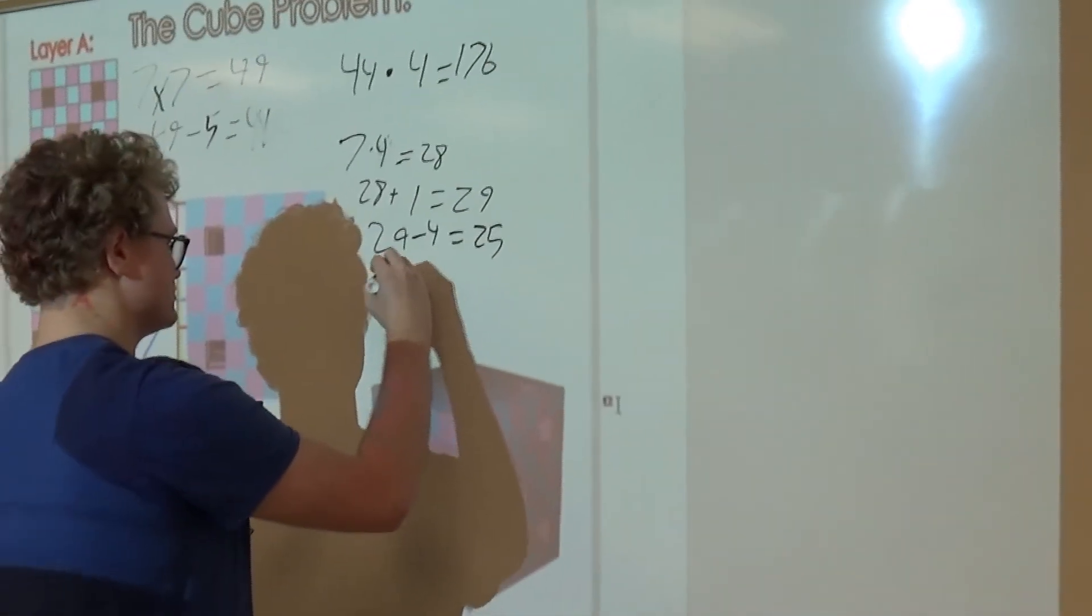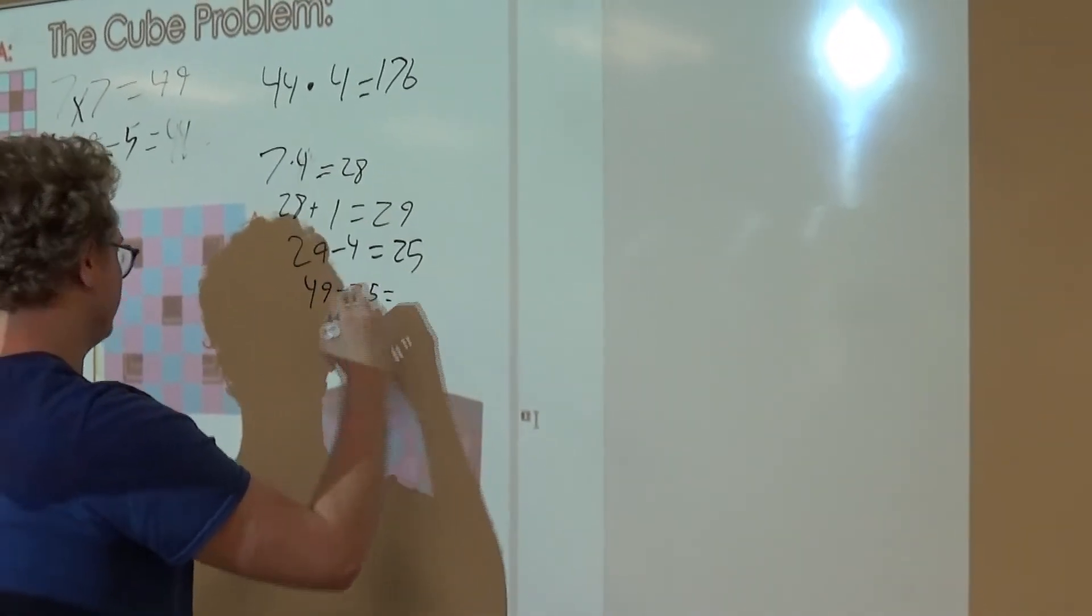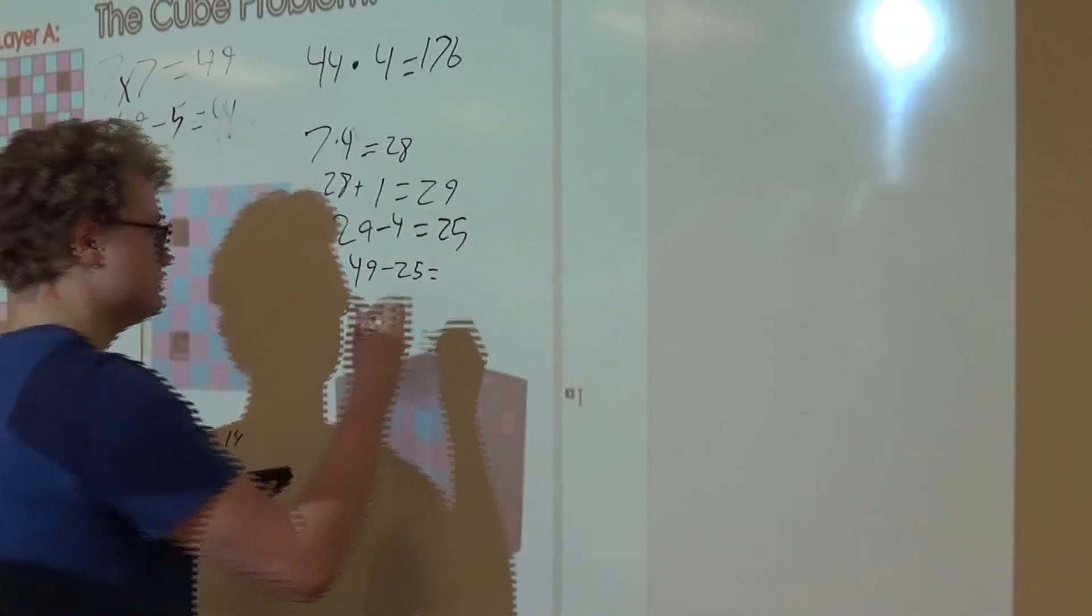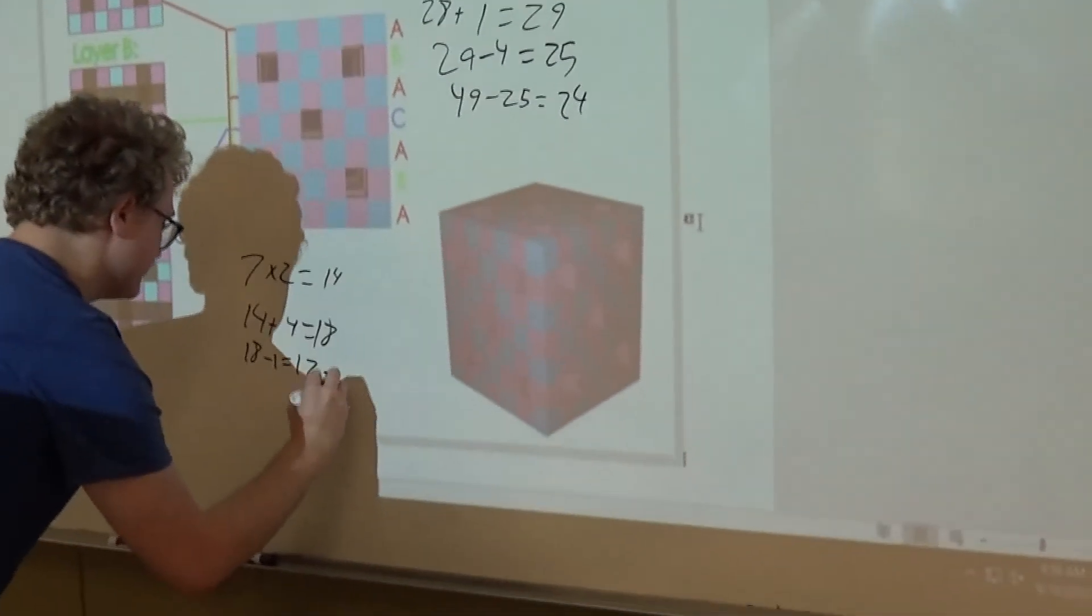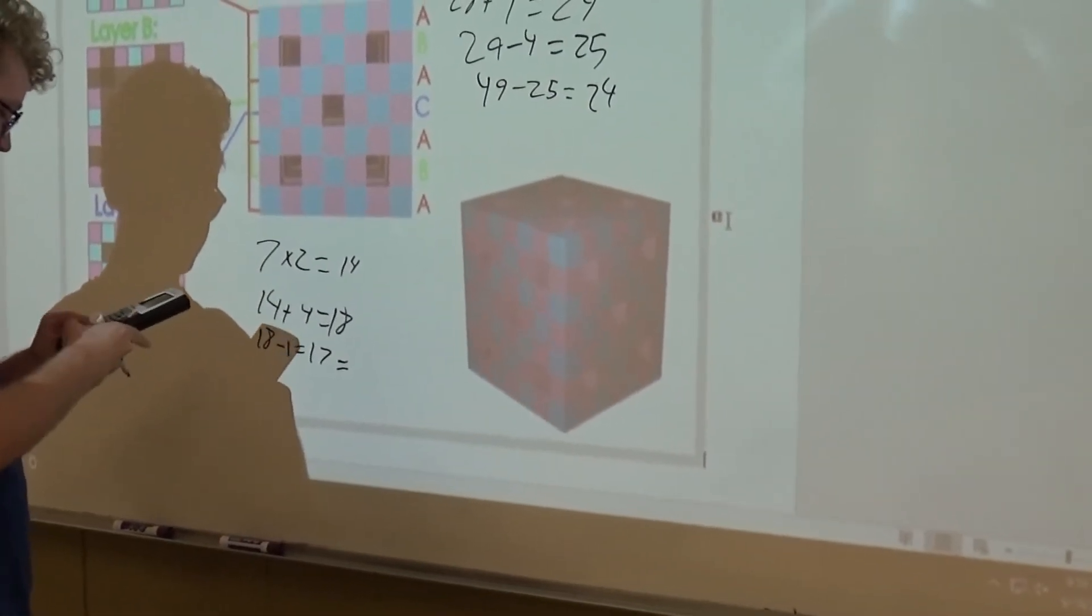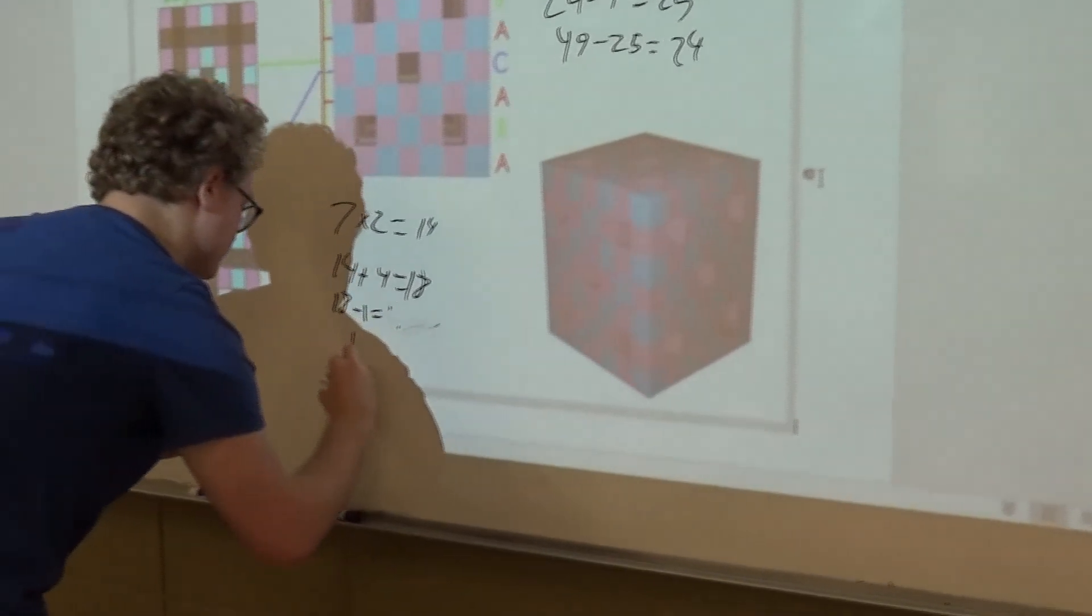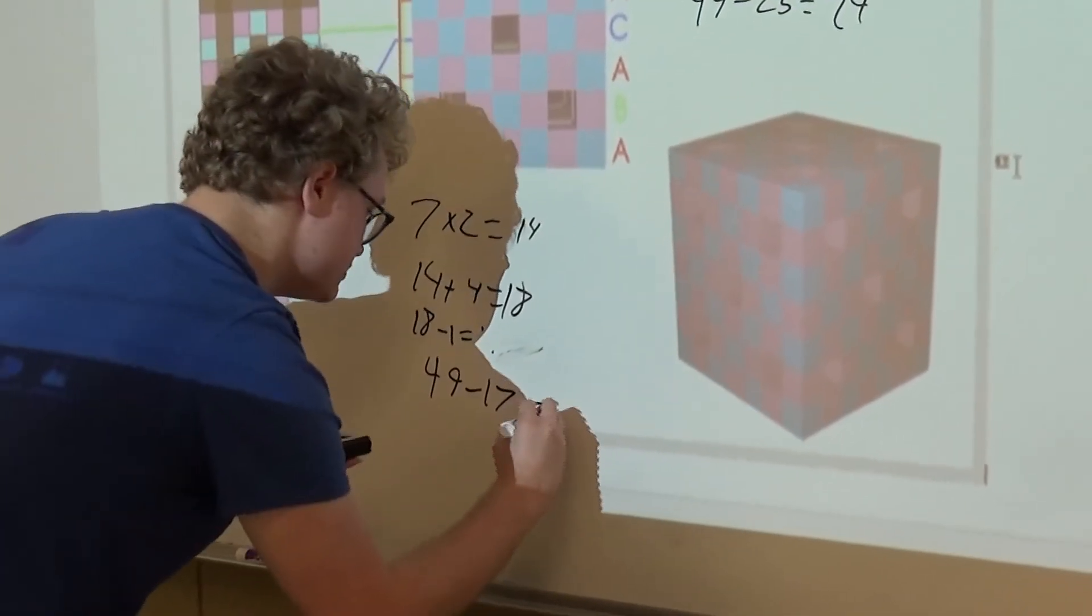Oh yeah, I almost forgot. I need to subtract this number from 49 to get the number of cubes in layer B. So there's 24 cubes in layer B. In layer C, we do 49 minus 17 to get 32 cubes.